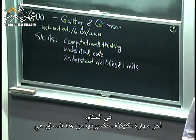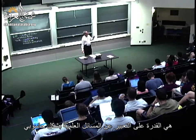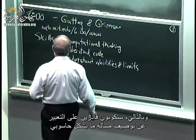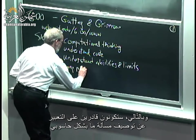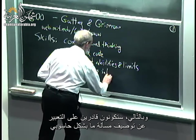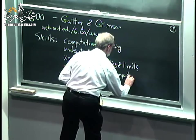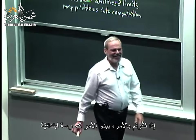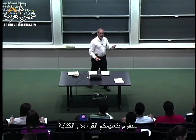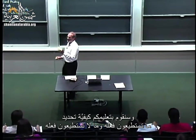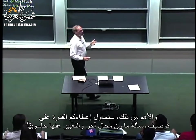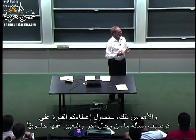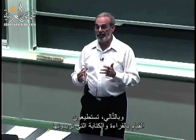Finally, the last practical skill you're going to get out of this course is the ability to map scientific problems into a computational framework — to take a description of a problem and map it into something computational. If you think about it, this sounds like grammar school: we're going to teach you to read, to write, to understand what you can and cannot do, and to take a description of a problem from some other domain and figure out how to map it into computation.